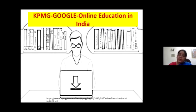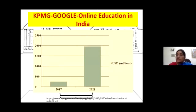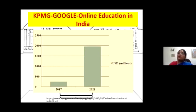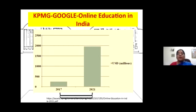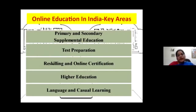KPMG and Google, back in 2016 — well before COVID — predicted what the online education scenario in India would look like. They found it was close to 247 million US dollars in 2017, and predicted it would reach close to 2,000 million US dollars by 2021. This was the kind of jump they were predicting, and we can see that it happened. In 2016, SWAYAM and UGC online program policies were being established, and international MOOCs like Coursera, edX, and Udacity were already active.